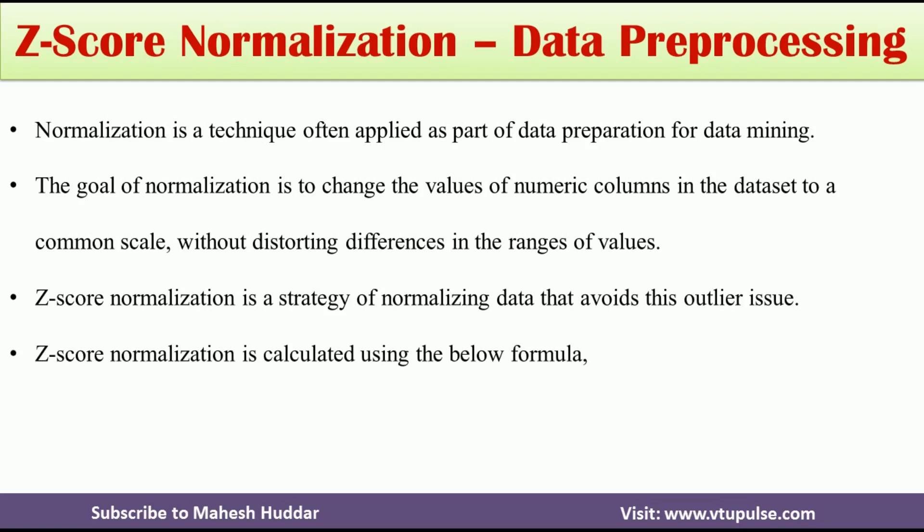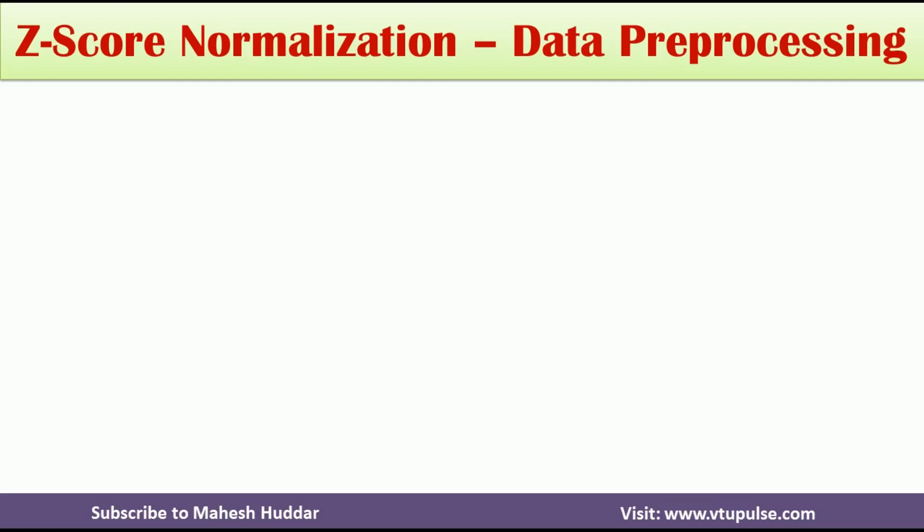Z-score normalization is calculated using the formula: z_if = (x_if − m_if) / s_f, where x_if is the current value, m is the mean, and s is the mean absolute standard deviation.